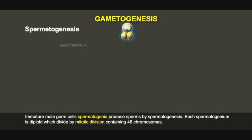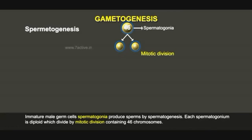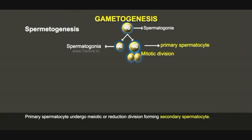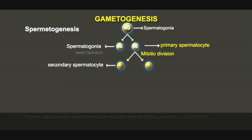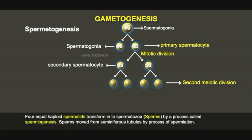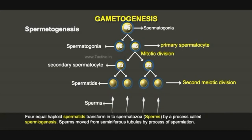Immature male germ cells called spermatogonia produce sperms by spermatogenesis. Each spermatogonium is diploid, containing 46 chromosomes, and divides by repeated mitotic division. Spermatogonia present on the inner side of seminiferous tubules multiply by mitotic division forming primary spermatocytes, which undergo meiotic or reduction division forming secondary spermatocytes. Secondary spermatocytes undergo a second meiotic division to produce four equal haploid spermatids, which transform into spermatozoa by a process called spermiogenesis.